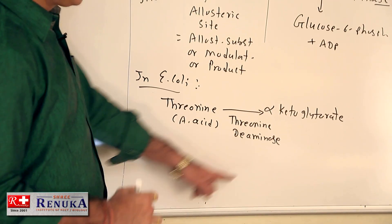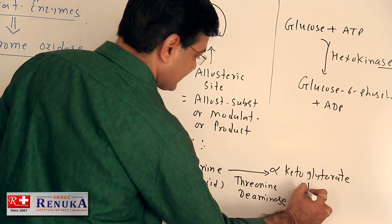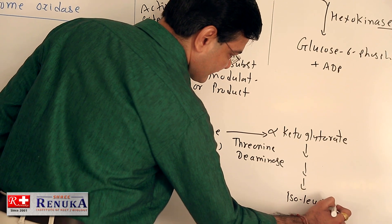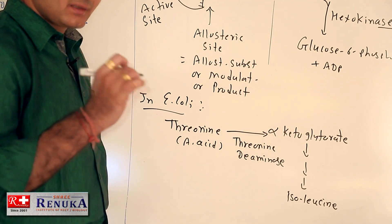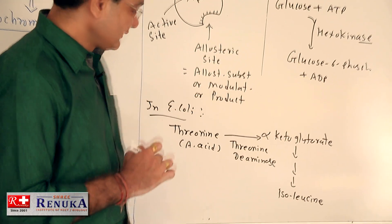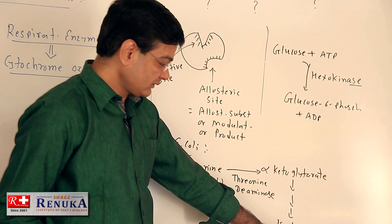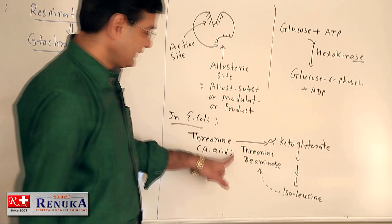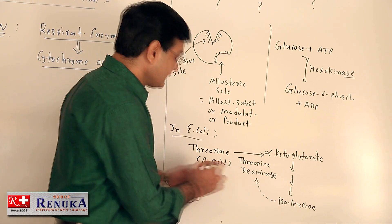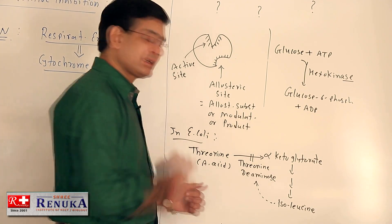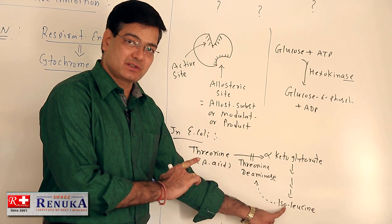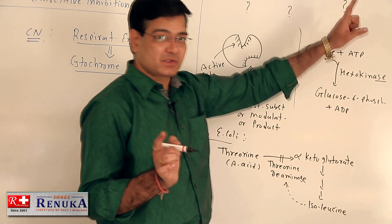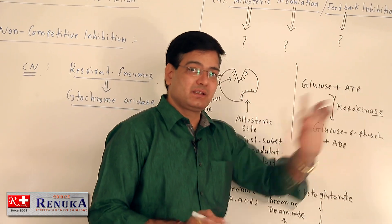Alpha-ketoglutaric acid is gradually transformed into isoleucine, which is another amino acid. When isoleucine forms, it binds again with the threonine deaminase enzyme and inhibits the entire reaction. So the product of the reaction inhibits the reaction itself — this is called product inhibition or feedback inhibition.